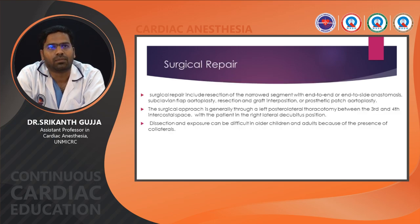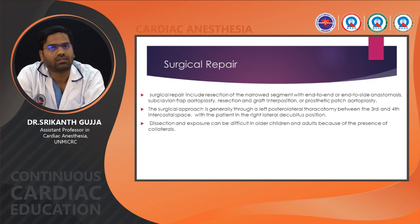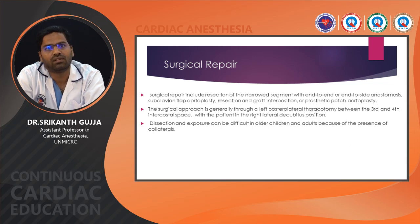Surgical repair includes resection of the narrowed segment with end-to-end or end-to-side anastomosis. The surgical approach is generally through a lateral thoracotomy with the patient in right lateral decubitus position. Dissection and exposure can be difficult in older children and adults because of the presence of collaterals.